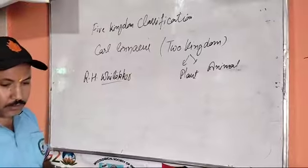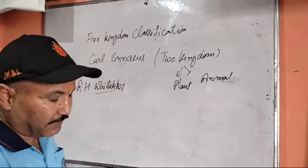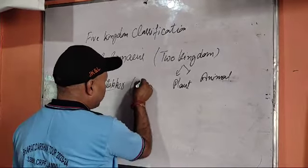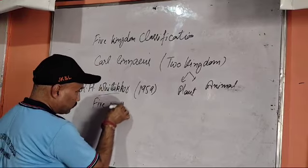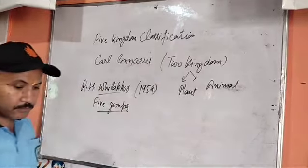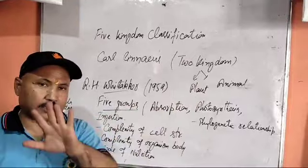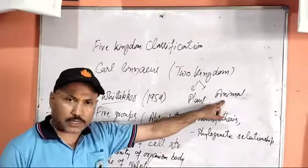Whittaker is a biologist. In 1959, he proposed that living organisms be divided into five groups — the five-kingdom classification. Carlos Linnaeus had said that living organisms are divided into two parts: plant and animal, two categories.